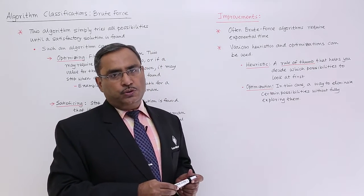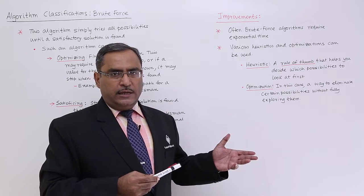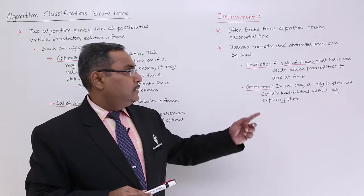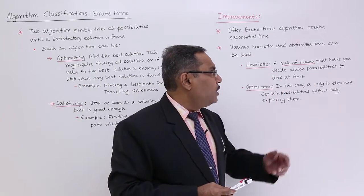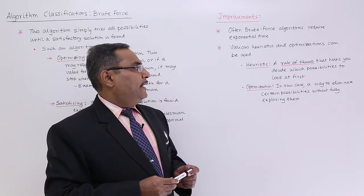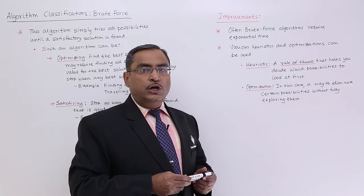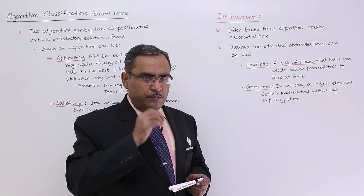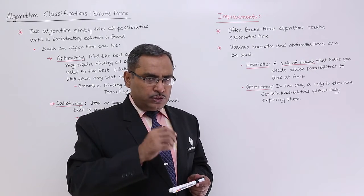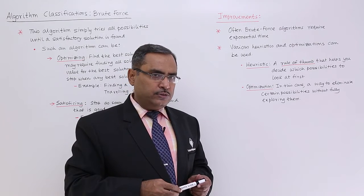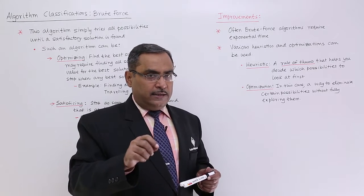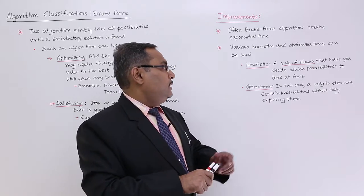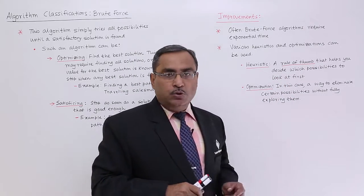What is heuristics? Heuristics means we will be having some prior estimates. Heuristic means a rule of thumb that helps you decide which possibilities to look at first. I'm having some heuristic value, some previous estimates. Using those previous estimates and heuristic values, we guess that this is the probable path which we should explore at first, that means which possibilities we should look at first.